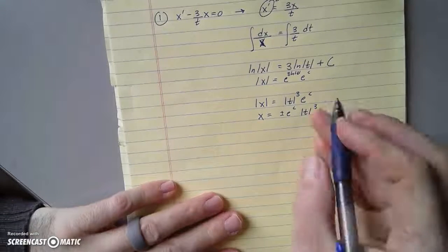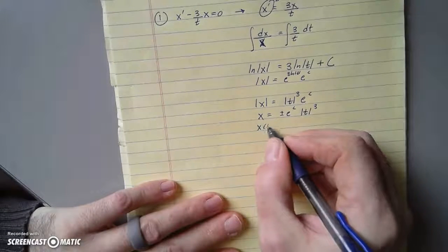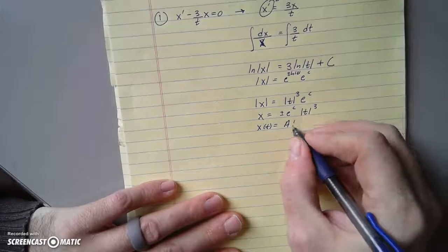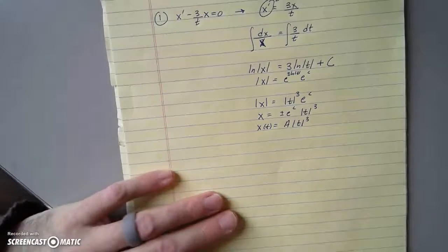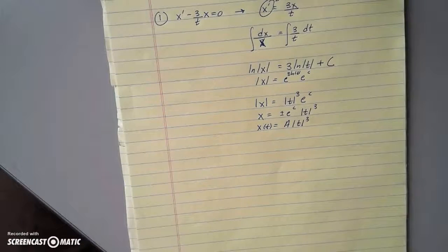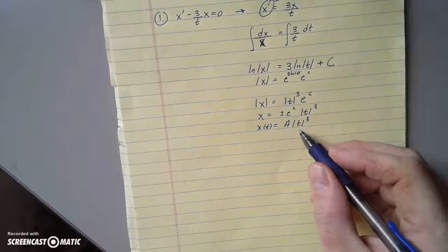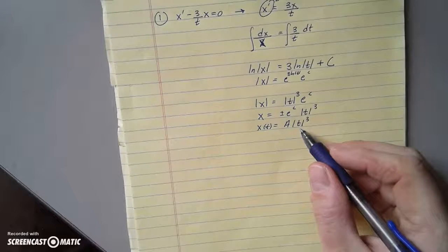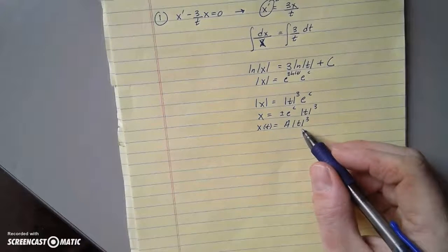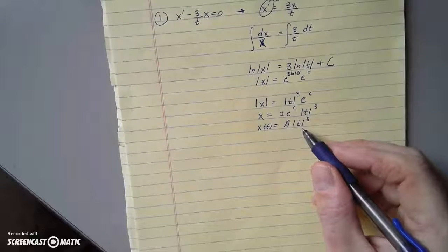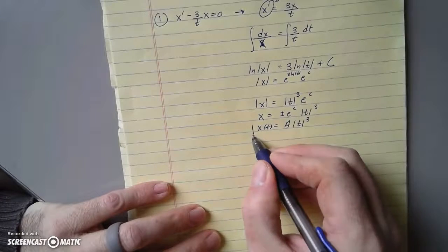Pull off the absolute values. You've got your plus or minus e^c. Now whether we take our absolute value off would depend on the initial conditions. So we can leave it on for now and just have x(t) = some constant, some positive or negative constant, times |t|^3. If we knew more about the problem, if we were only doing positive time, then we wouldn't need the absolute values.